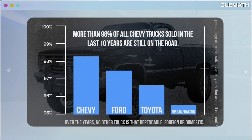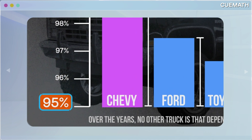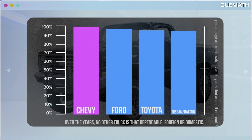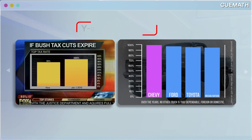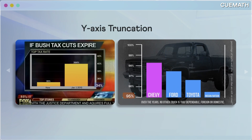Here's another one — a Chevy truck ad. Looks like Chevy trucks have significantly outperformed every other brand. But again, the Y-axis starts at 95%. If we start at 0, the difference is minimal. This Y-axis truncation — starting it from a non-zero number — is often used to exaggerate minor variances.